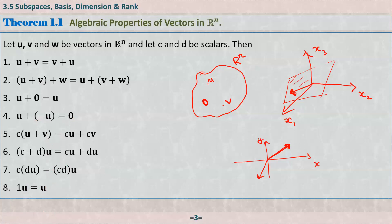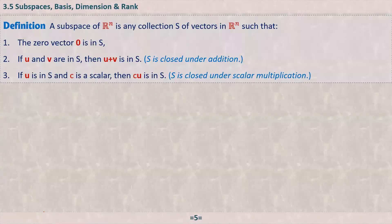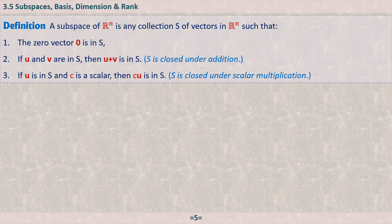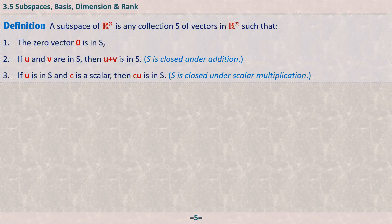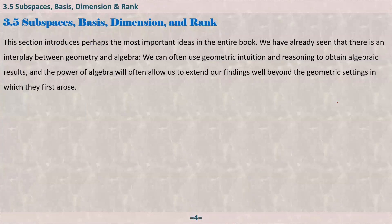When we talk about a vector space, we mean that all these operations are possible. Now let's look at the definition of a subspace of Rn. A subspace of Rn is any collection S of vectors in Rn satisfying three conditions: (1) the zero vector is in S; (2) if u and v are in S, then u + v is in S — that is, S is closed under addition.